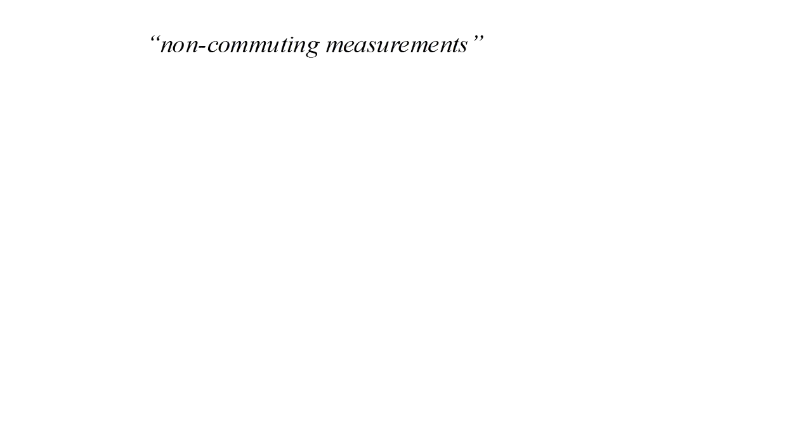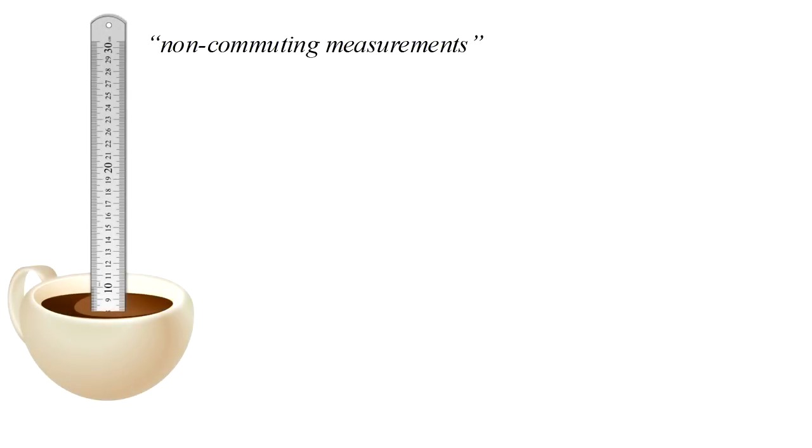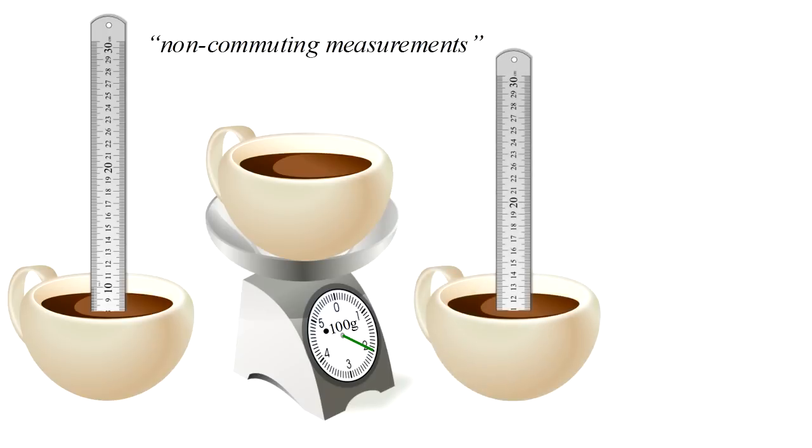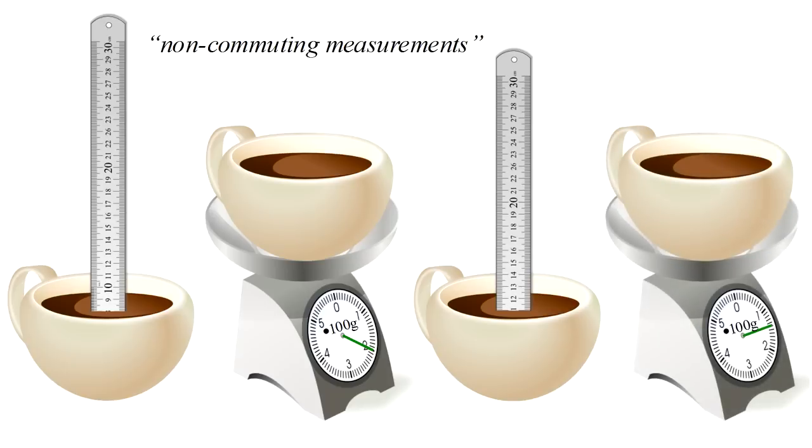Now, suppose instead that after measuring a depth of eight centimeters and a mass of 200 grams, we again measure the depth and obtain a result of eleven centimeters. We measure the mass again and find 140 grams. Our measurements are non-commuting. In this case, we simply have no physical basis for saying that coffee has a specific depth or mass.